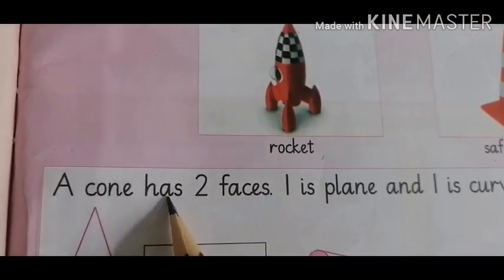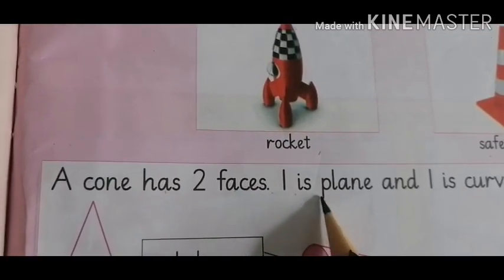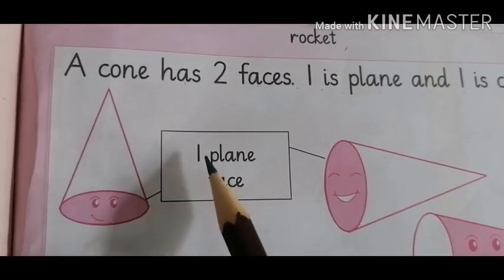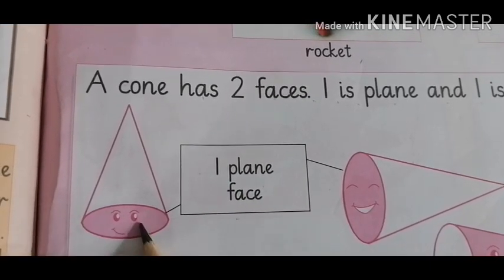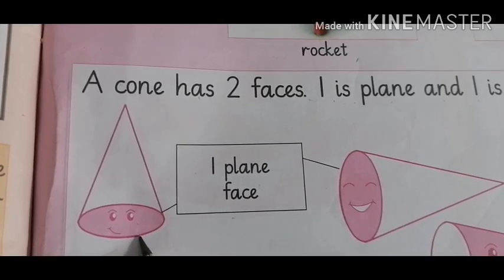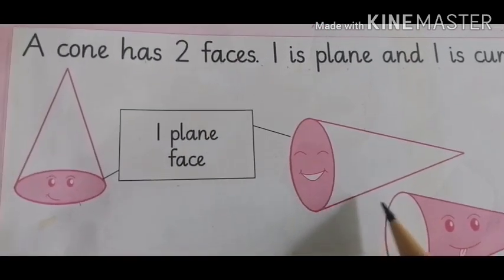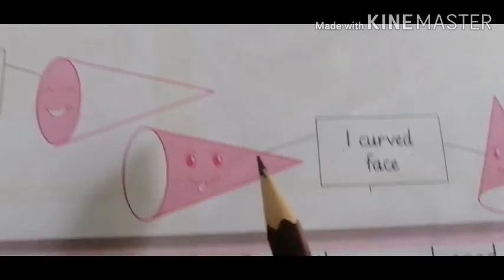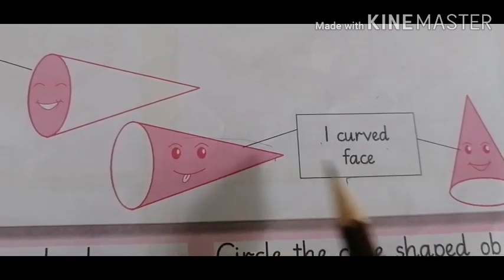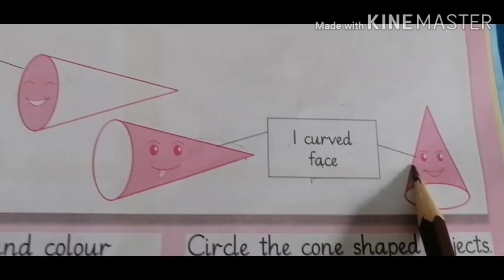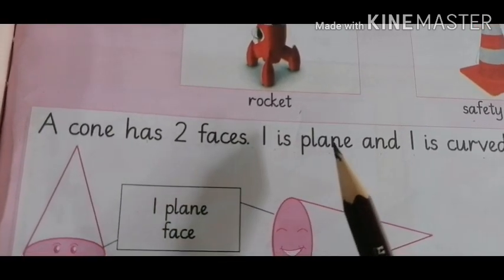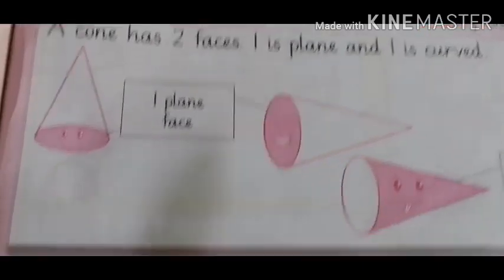Now look at the next question. A cone has two faces: one is plane and one is curved. Do you know a cone has two faces? Look at the picture of a cone — yes, one plane face and one curved face. The flat bottom is the plane face, and the upper part is the curved face because it is in a curved shape. So a cone has two faces: one is plain and one is curved. How many faces does a cone have? Two faces.